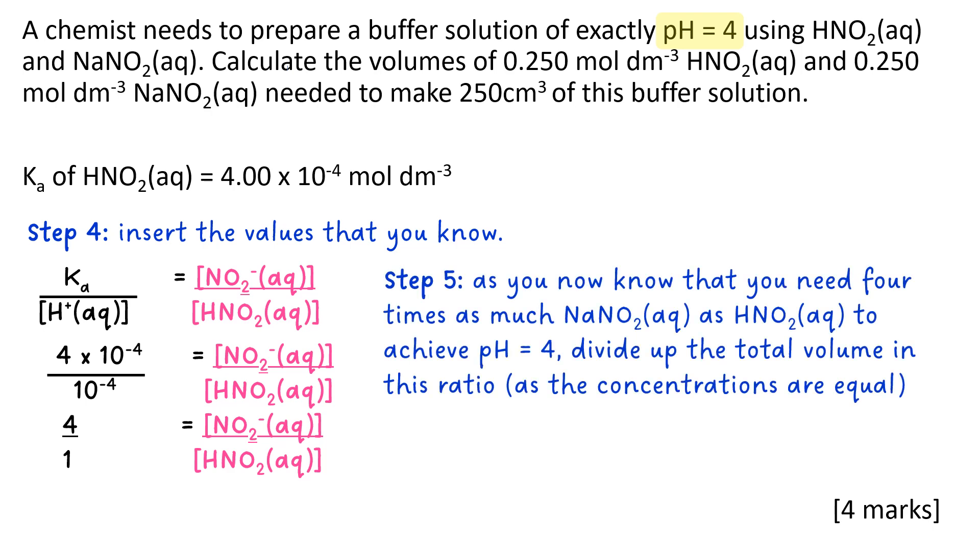So it now tells you that you need 4 times as much sodium nitrate as you do HNO₂ to achieve pH 4. So therefore you divide up the total volume, which is 250 cm³, into this ratio. So you have a 4 to 1 ratio which totals 250. So 4 fifths of your volume is going to be NaNO₂, which is 200 cm³. And 1 fifth of your volume is going to be HNO₂, which is 50 cm³.